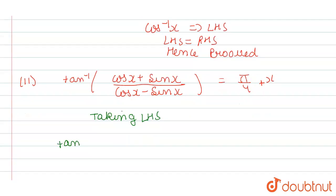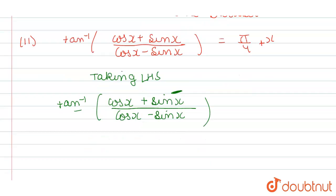We have given tan inverse of cos x plus sin x divided by cos x minus sin x. Since our outer term is tan inverse, so first of all, we will need to change this term into tan term. How we do that?